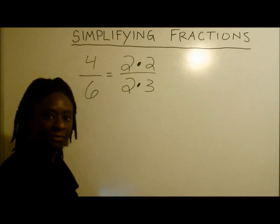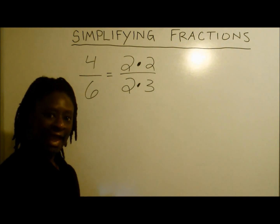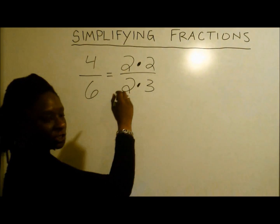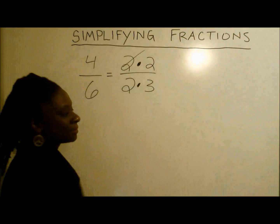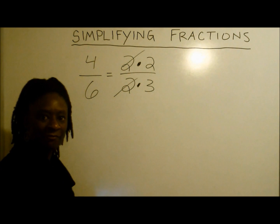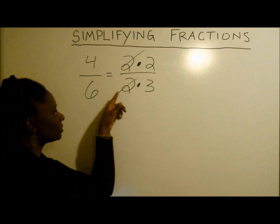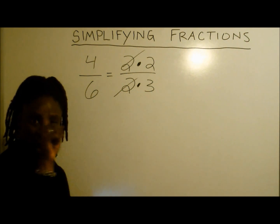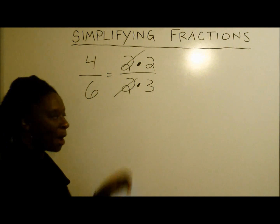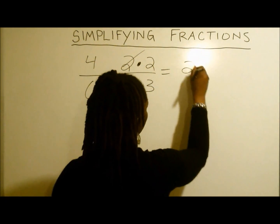Now that we've broken these numbers down into a simpler form, what's our next step? Well, what we have to do now is eliminate any like terms. So we can take this 2 here and get rid of it and say goodbye to this 2. Now what we're left with is 2 over 3. If you notice, 2 over 2 is also equivalent to 1, so in all actuality we're simply multiplying 1 by 2 over 3. So what we're left with is 2 thirds.